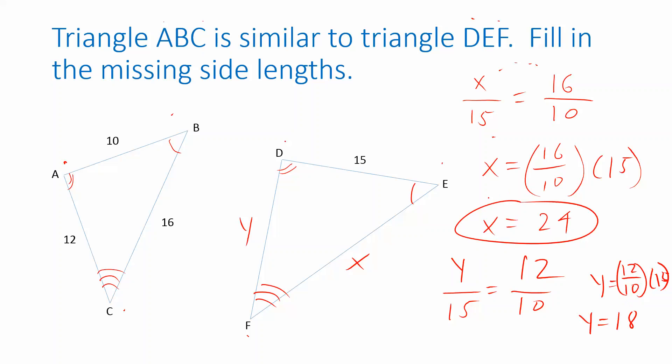So these are the unknown side lengths. And I can go back and fill those in on my triangle. This side was X, so that's 24. And this side was Y, that's 18.